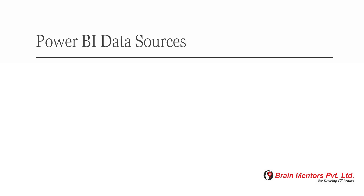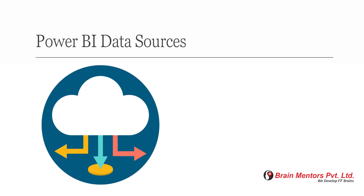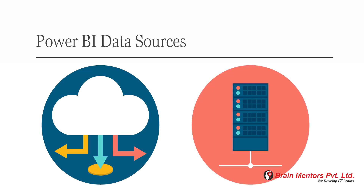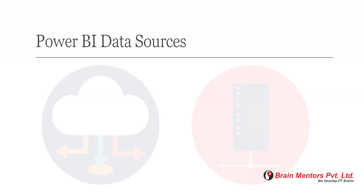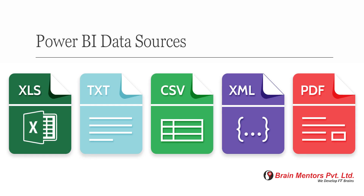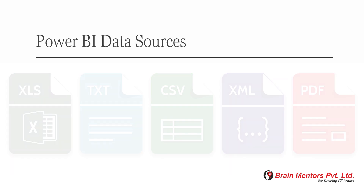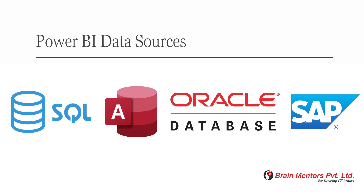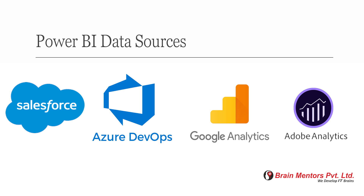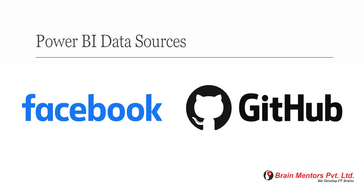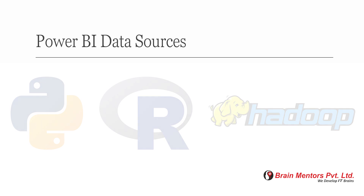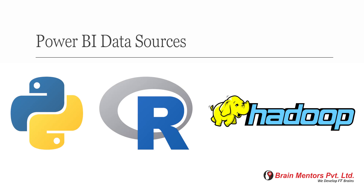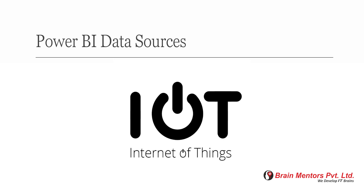Now we are going to talk about data connections in Power BI. You can connect to cloud-based sources, on-premises data sources using a gateway, online services, and direct connections. Power BI can connect to files like Excel, text, CSV, XML, and PDF. It can also connect to databases like SQL Server, Access Database, Oracle, and SAP HANA. It can connect to online services like Salesforce, Azure Apps, Google Analytics, Adobe Analytics, Facebook, and GitHub. It can also connect with Python, R script, Spark, and Hadoop, and it provides support for IoT as well.